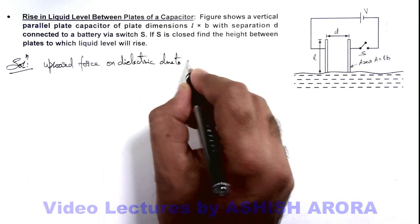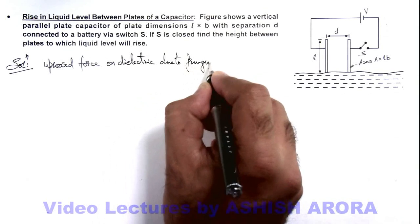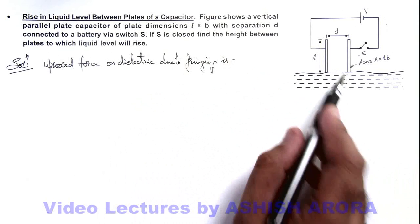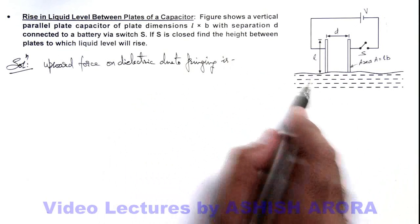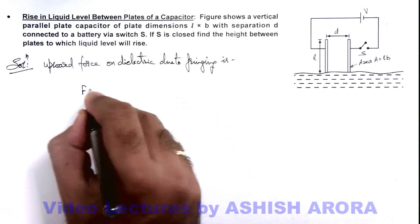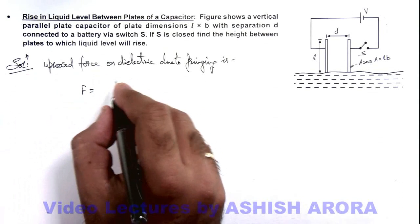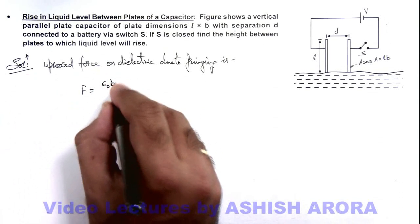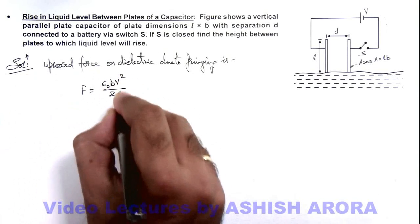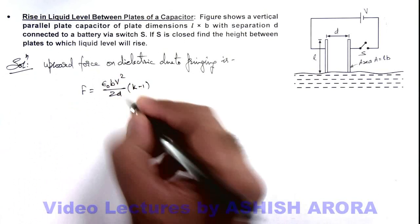The force due to fringing - because the actual force which acts on the dielectric is due to the fringing - and the value of this force we already calculated in conceptual videos, which is ε₀bV²/(2d) multiplied by (k-1).